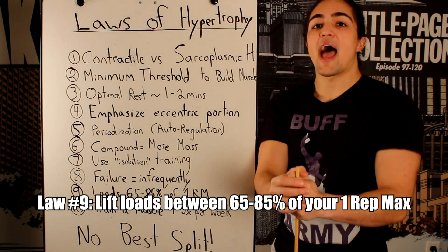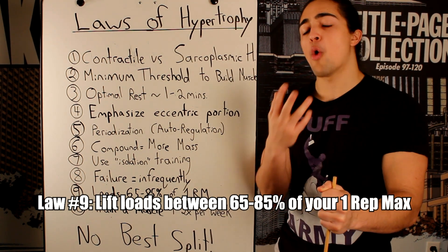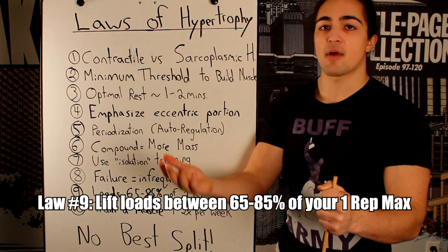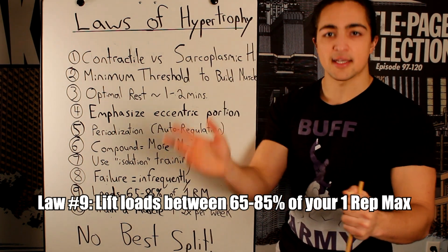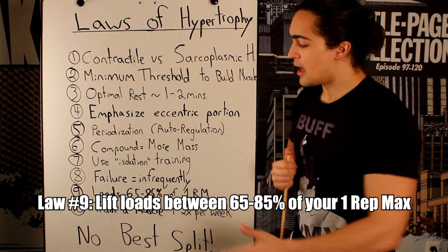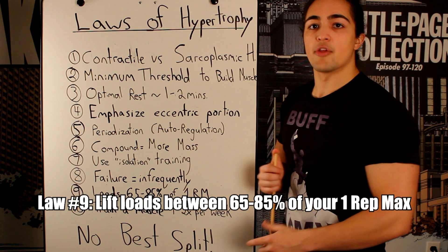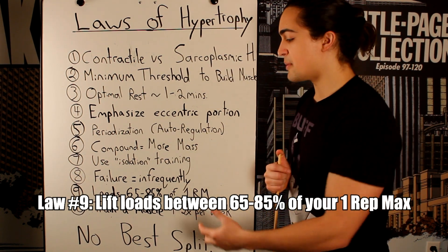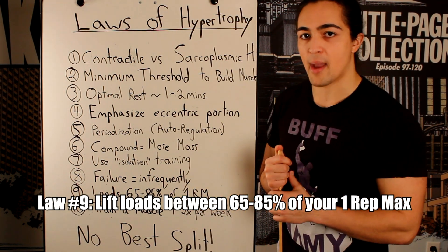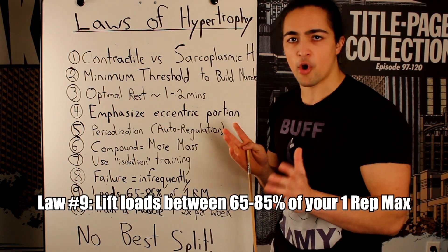Law nine: how much weight should you lift? This is expressed as a percentage of your one rep max. If you don't know your one rep max, you don't have to test it — there are ways to calculate it based off your 85% max. Essentially, the bulk of your loads should be between 65 to 85% of your one rep max, and most individuals are usually good at hitting that target range.